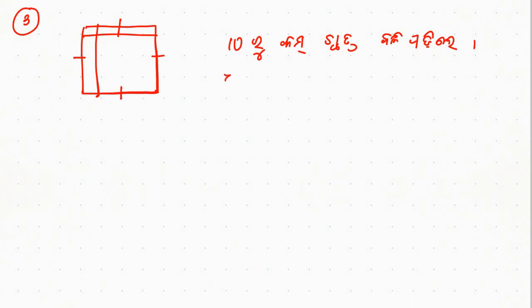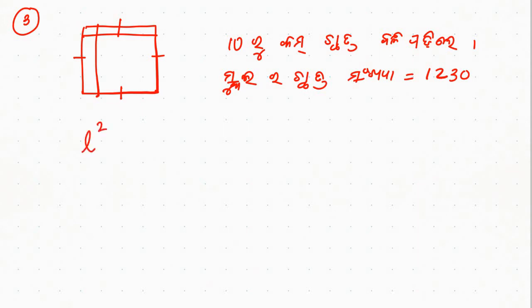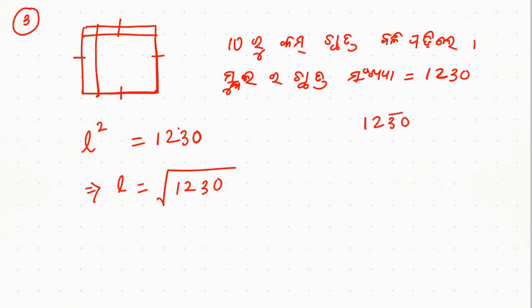Now we will ask the question from school to school. School 1, 2, 3. The second part is the same as the whole square. The square is the same as the square. So we will do the same as the square. So you can use 16.